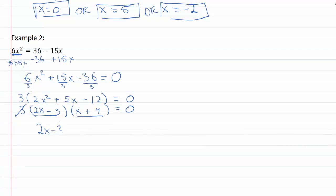2x - 3 = 0 and x + 4 = 0. Okay so plus 3 plus 3, 2x = 3. Minus 4 minus 4, x = -4. Oops this one's not done yet. Okay so x = 3/2 is one of our solutions or x = -4 is our other solution.